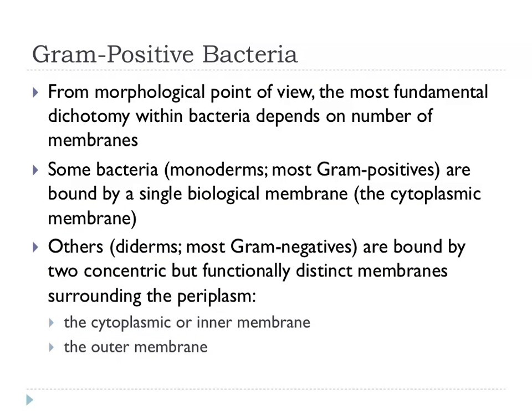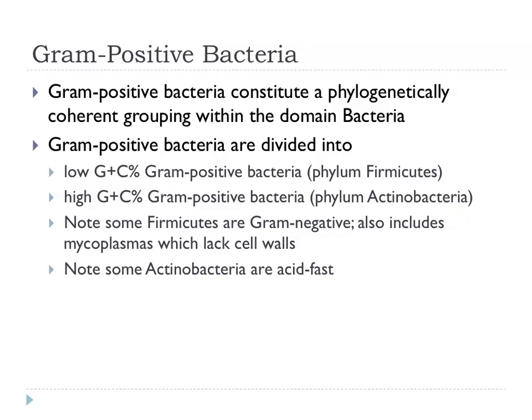Just to remind you of some very basic bacteriology: when we look at the morphological point of view of bacteria, we see this dichotomy — not so much in the gram stain, but in the number of membranes they have. We have monoderms, which are mostly the gram-positives, bound by a single cytoplasmic membrane, and diderms, which are pretty much the gram-negatives, bound by two concentric but distinct membranes. We're now going to focus on these monoderms, the gram-positive bacteria.